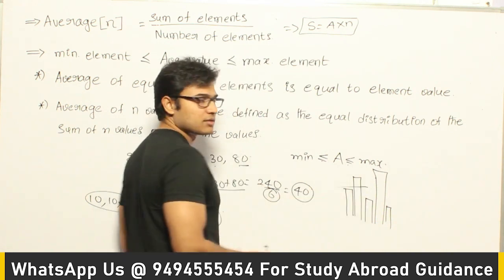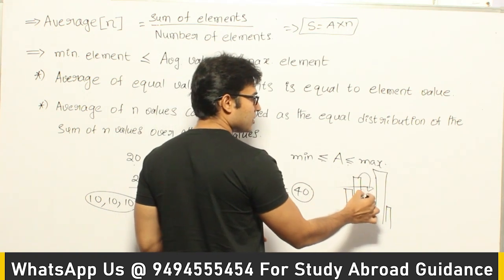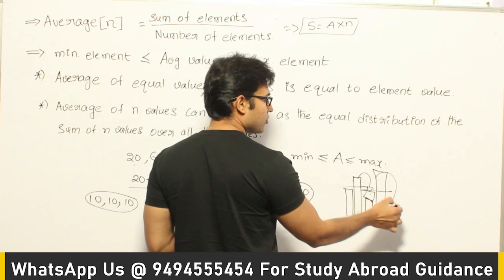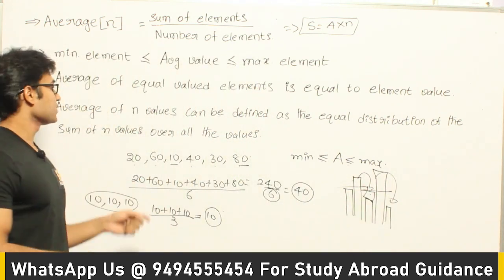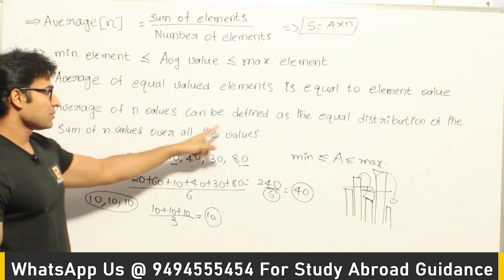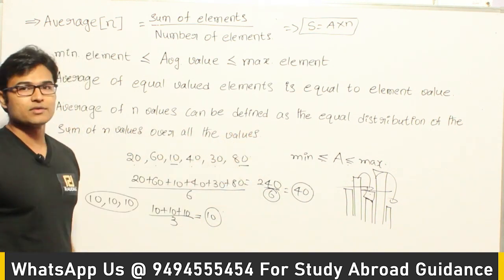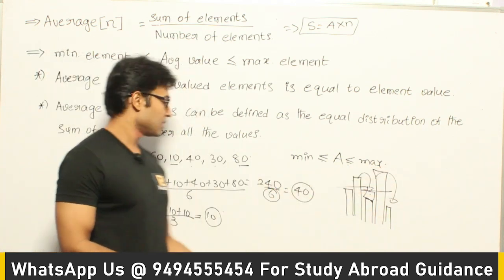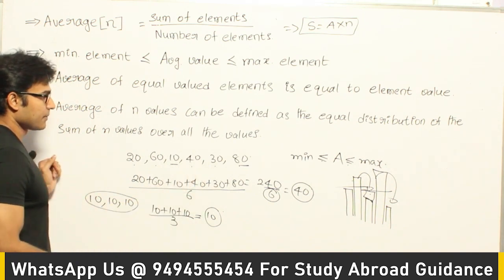Now it is nothing but take out the higher part from the higher values and try to distribute it over all the values like this. You take this part put it here, you cut this part put it here. That is how you can understand the averages. Average of n values can be defined as equal distribution of the sum of n values over all the values. So you take all the values and you try to distribute them equally. So in this example if you try to understand how did we get 40.